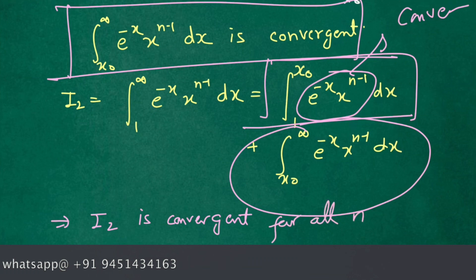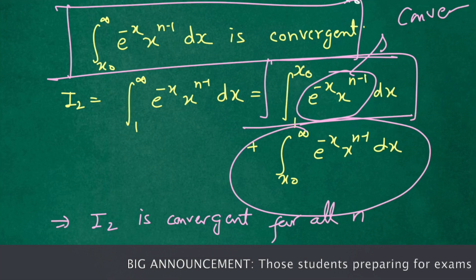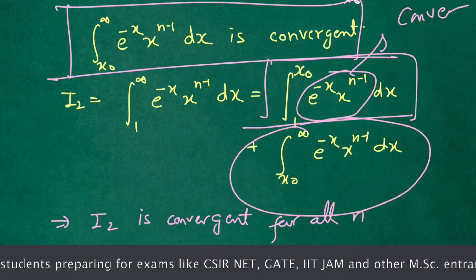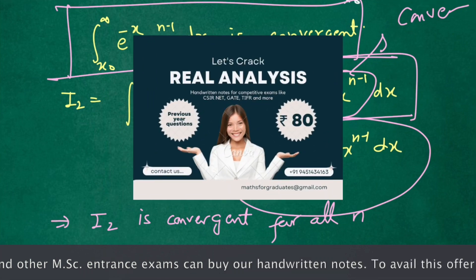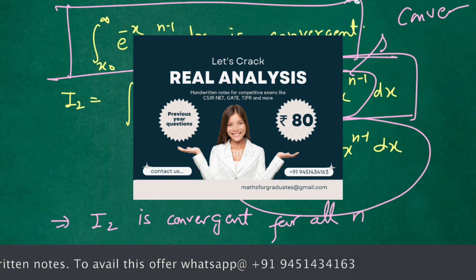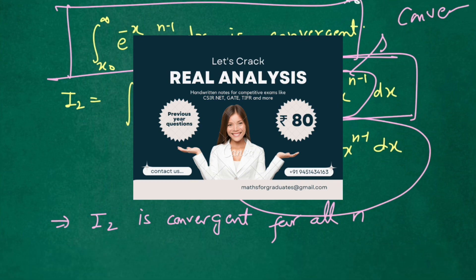I1 is convergent when n is greater than 0, and I2 is convergent for all values of n. So the whole improper integral is convergent when n is greater than 0. This completes the proof. This video ends here. Those students preparing for exams like CSIR-NET, GATE, and other MSc entrance examinations can buy our real analysis handwritten notes for a reasonable price of Rs 80. If you are interested, you can contact us through the WhatsApp number shown. Thank you, and thanks for watching.